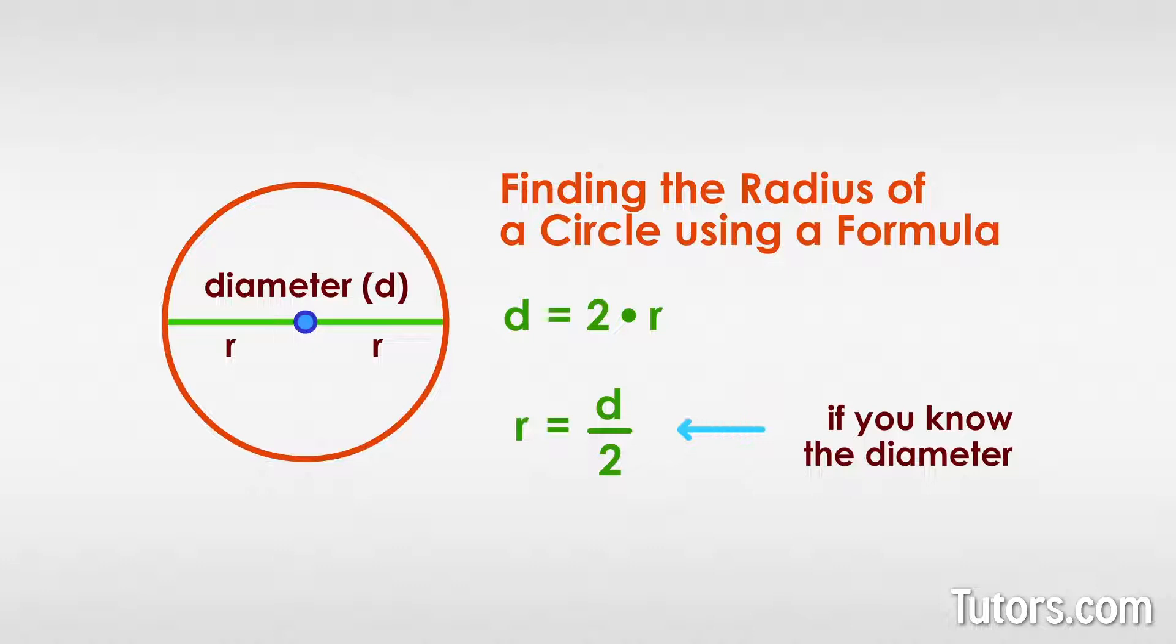If you know the diameter of a circle, you can find its radius by dividing the diameter by 2. If you know the radius and need the diameter, multiply radius times 2.